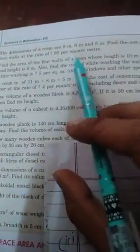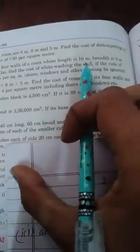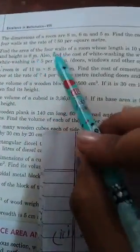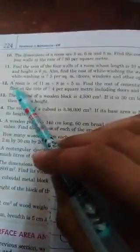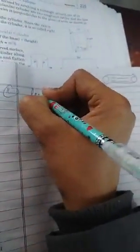Question number 11. Find the area of 4 walls of a room whose length is 10 meter, breadth is 8 meter and height is 6 meter. Also find the cost of whitewashing at 5 per square meter. Same as 10th question. Length is given 10 meter,